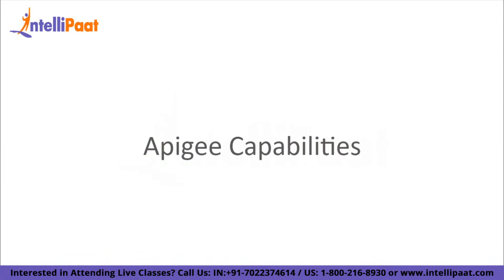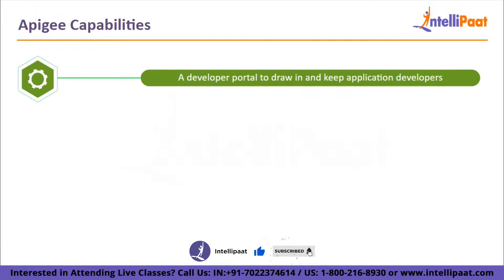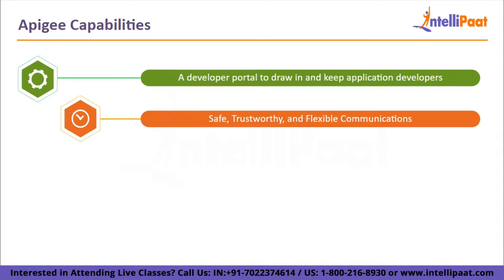Now let's talk about the Apigee capabilities. First, a developer portal to draw in and keep application developers, allowing them to find, investigate, buy, test and register for use of APIs, hence opening the door to collaboration. Next is safe, trustworthy and flexible communications to protect and manage traffic between clients and backends as well as between organizations' APIs and the programmers, clients, partners and staff who utilize those APIs.